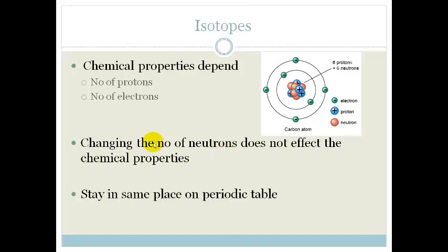So if we had to change the number of neutrons of an atom, it would still stay in the same place in the periodic table. But if I removed a proton or added a proton to this atom, it would no longer be carbon.